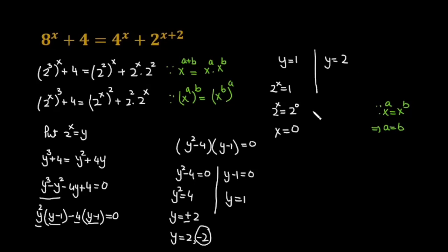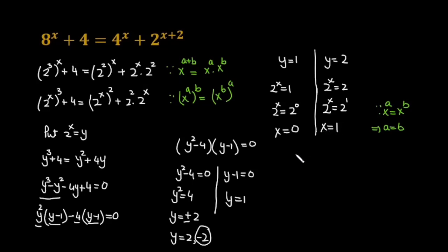In the case y equals 2, we have 2 raised to the power x equals 2 raised to the power 1. The bases are the same, so equating the powers with the same rule of exponents, x equals 1. So we got two values of x: x equals 0 and x equals 1. This is my final answer.